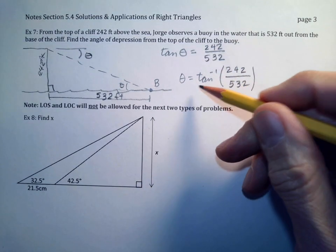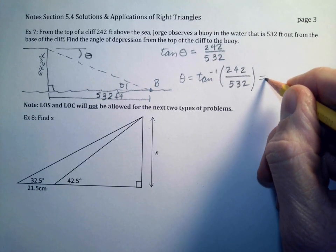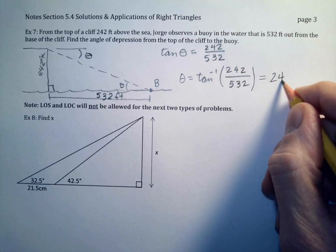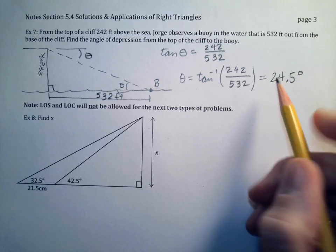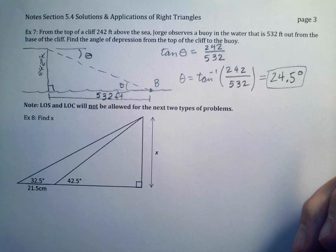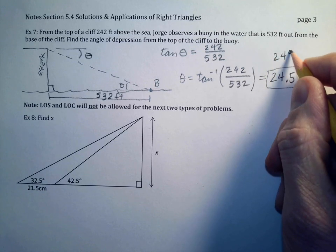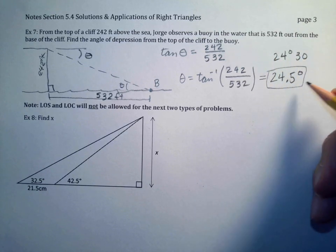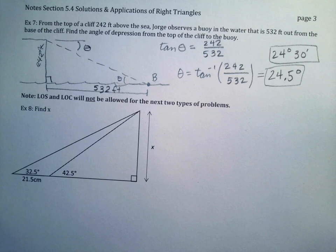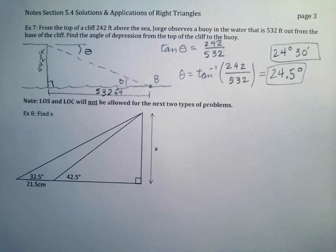Using the inverse tangent on a calculator, θ ≈ 24.5 degrees, which can also be expressed as 24 degrees 30 minutes. Either format is acceptable since the problem doesn't specify the angle format.